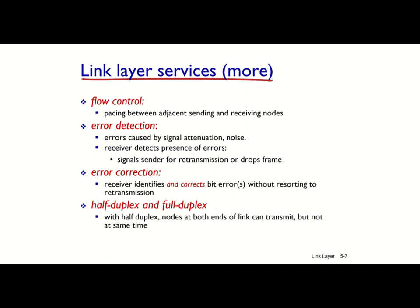Some link layer services provide error detection and/or error correction. Error detection means detecting that an error has occurred. Error correction means the receiver identifies and corrects the bit error or errors without needing retransmission. Some link layer protocols also provide half-duplex or full-duplex communication. Full-duplex means both parties can transmit simultaneously in opposite directions, while half-duplex means while one transfer direction is active, data cannot be transferred in the opposite direction at the same time.